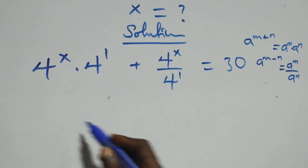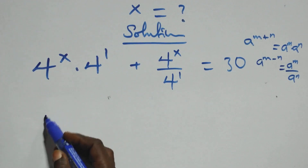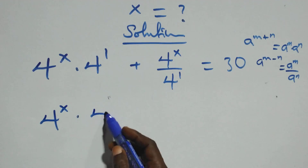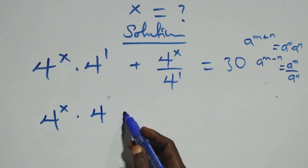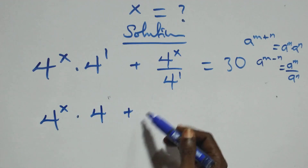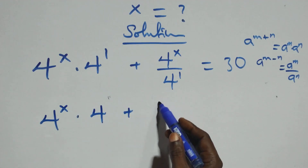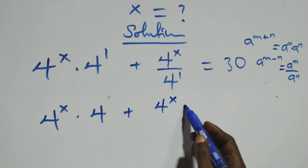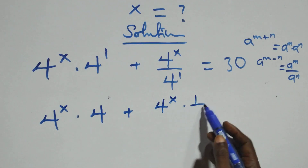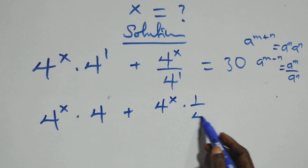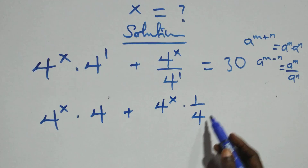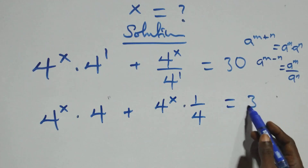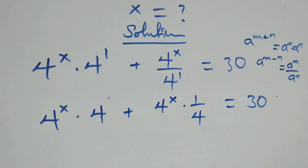So this is the same thing as 4^x times 4^1, that is 4, plus 4^x times 1 over 4^1, which is 1 over 4, equals 30 on this side.